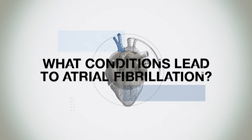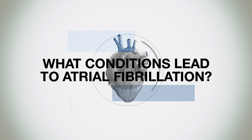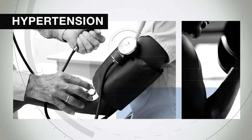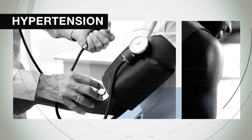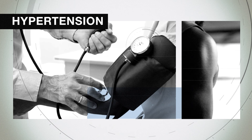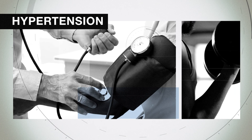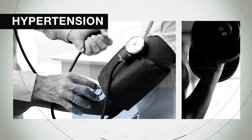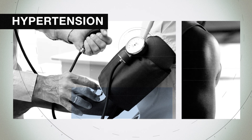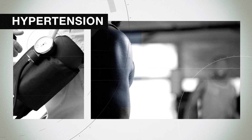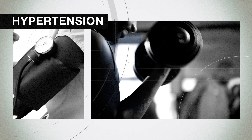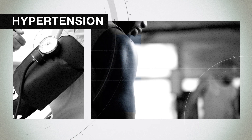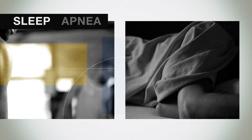Certain conditions increase the risk of AFib, including hypertension, sleep apnea, and diabetes. Hypertension is a condition where the heart has to push against the blood pressure to pump blood around the body. As a result, the muscle in that chamber gets thicker and thicker — think of a weightlifter whose muscles get denser in response to their training. Unfortunately, that's not a good thing in the heart.